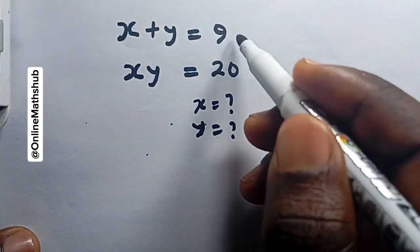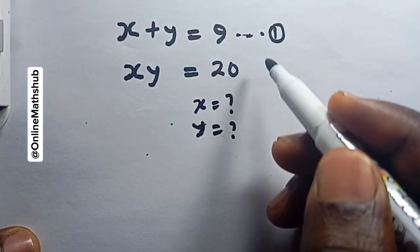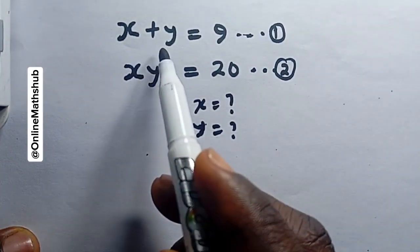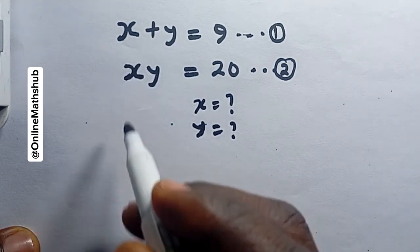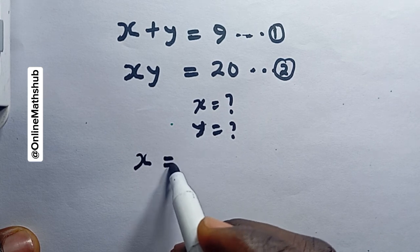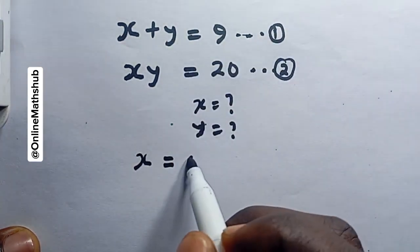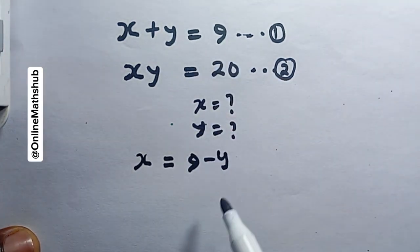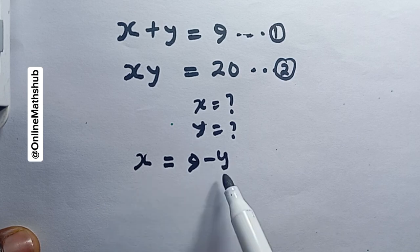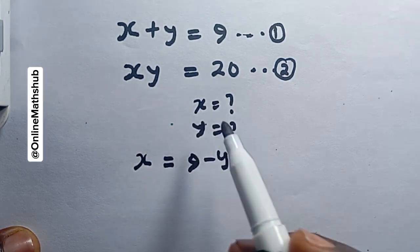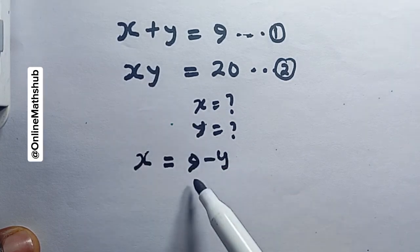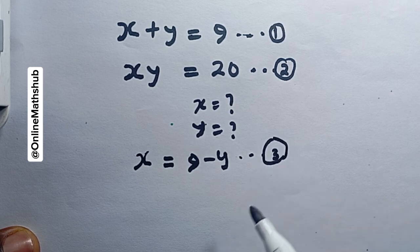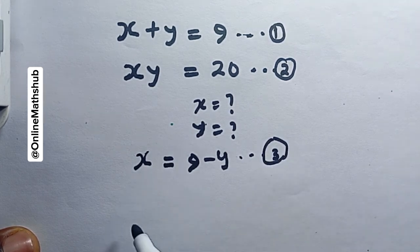I'll name the first equation 'equation 1' and the second 'equation 2.' I'm going to make x the subject in equation 1, so x will be equal to 9 minus y. I'll call this equation 3 for easy referencing, and I'm going to use this expression to substitute into equation 2 — wherever I see x, I'll replace it with 9 minus y.